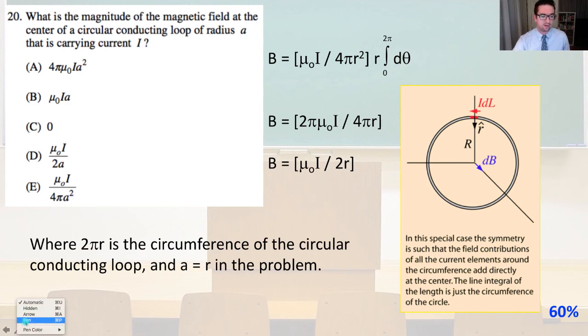We can see our diagram below right here for a visual representation of what we're doing. And so B is going to equal 2 pi mu naught I over 4 pi r. And B is going to equal mu naught I over 2r, where 2 pi r is the circumference of the circular conducting loop and A equals R in this problem. So mu naught I over 2r is mu naught I over 2a, that is answer D.